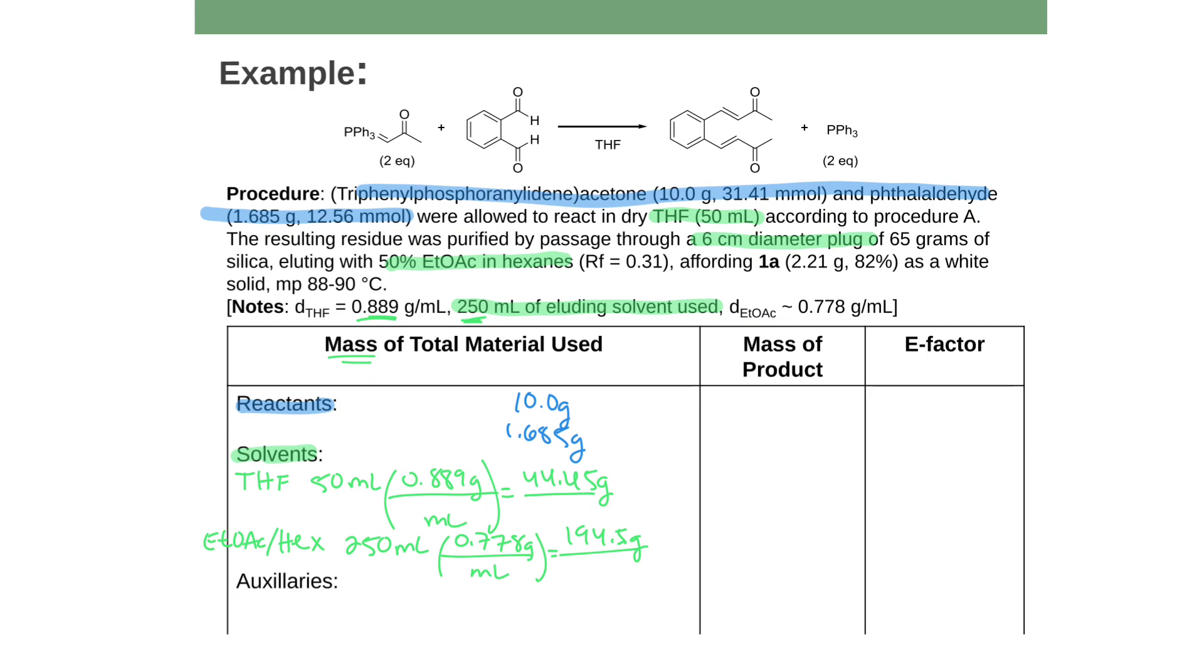What about auxiliaries? So these would be things that are not solvents and reactants, so things like weigh paper or water used for something, or recrystallization solvents would be with solvents. But like in my case, this is silica. So 65 grams of silica, that's something that I use to purify this compound, but it's not my product. It's just something that I use to help isolate my product. So I'd also have to add that 65 grams of the silica. And so if I add all of those numbers up, the 10, the 1.685, the 44.45, the 194.5, and the 65, I get a total of 315.635 grams. I'm not being a stickler about sig figs here, by the way. We're trying to get a rough idea of the E factor. That's the total amount of stuff used in this reaction.